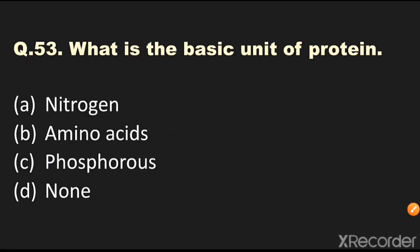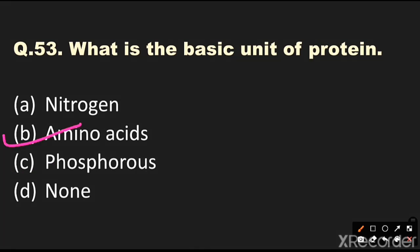Question number 53: What is the basic unit of protein? Options are nitrogen, amino acid, phosphorus, or none. The answer is amino acid — amino acid is the basic unit of protein.